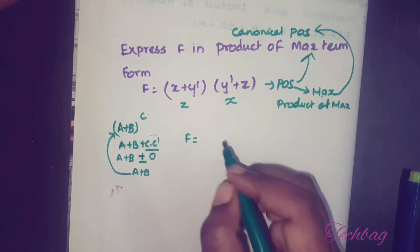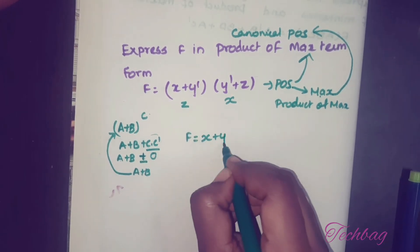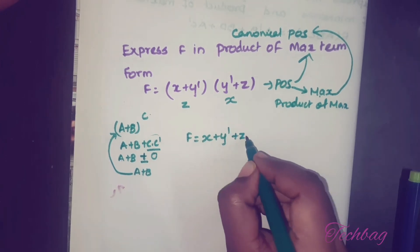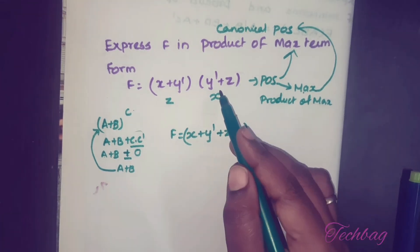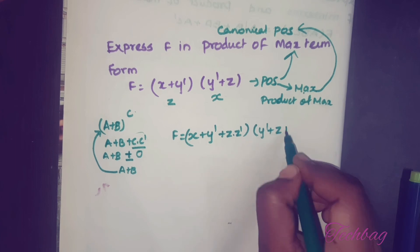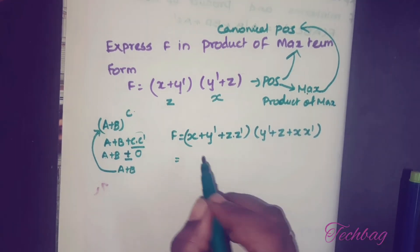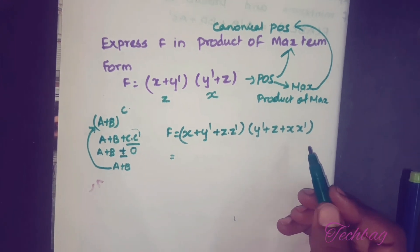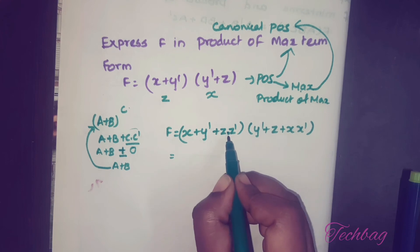Applying this to f: in the first term (x plus y dash), z is missing, so you add z·z' with this. In the second term (y dash plus z), x is missing, so you add x·x' with this. Next, expand this using the distributive property of the AND operator.